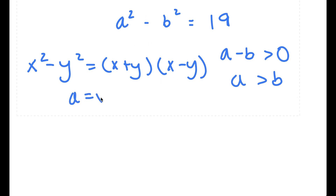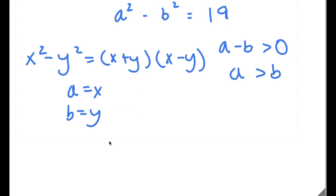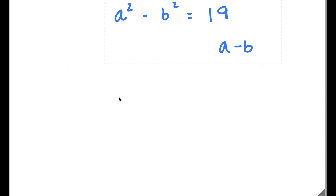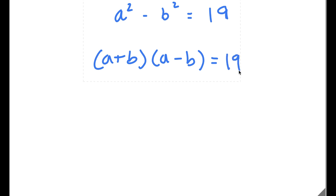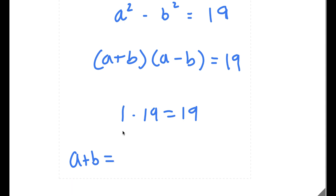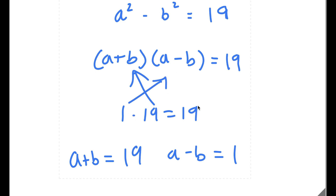So we can think of a as x and b as y, giving us a plus b times a minus b, which equals 19. Now, 19 equals 1 times 19; these are the only two factors of 19 because 19 is a prime number, meaning its only factors are 1 and itself. So we can think of a plus b as 19 and a minus b as 1.